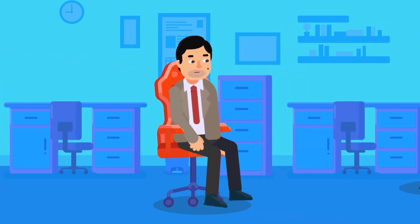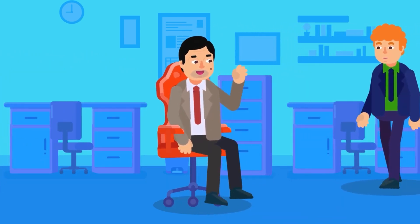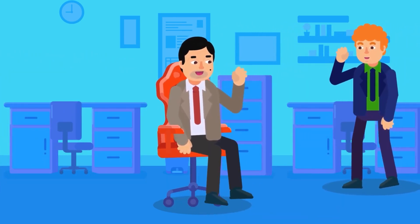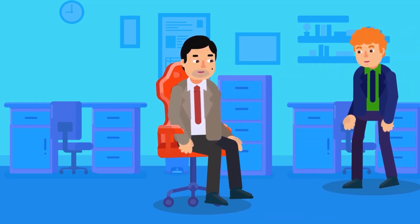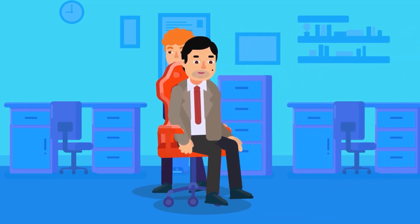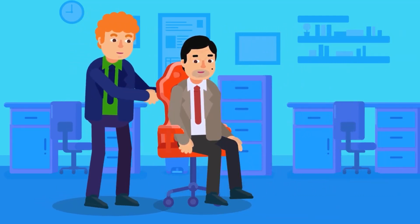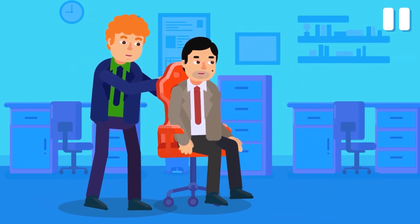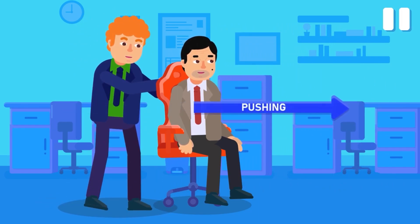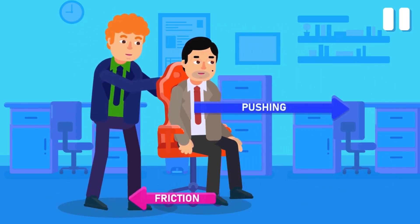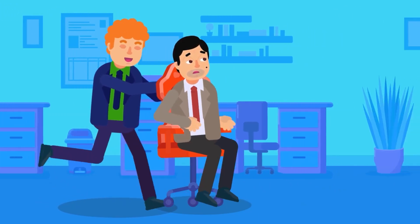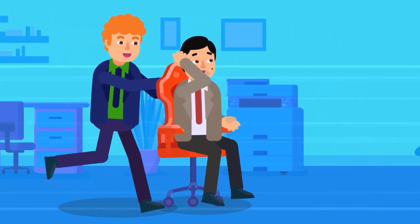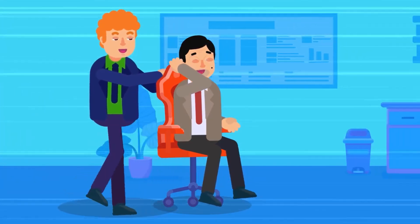Looking at the following examples: if you sit in a wheeled chair and ask your friend to push you along the hall, then the following two things happen. One, if the push from your friend is stronger than the friction between the chair and the floor, then the chair starts to move in the direction of push.